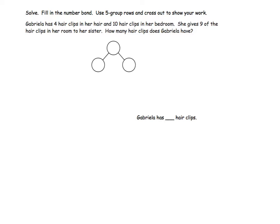Solve, fill in the number bond, use 5 group rows, and cross out to show your work. The problem states, Gabriela has 4 hair clips in her hair and 10 hair clips in her bedroom. She gives 9 of the hair clips in her room to her sister. How many hair clips does Gabriela have?